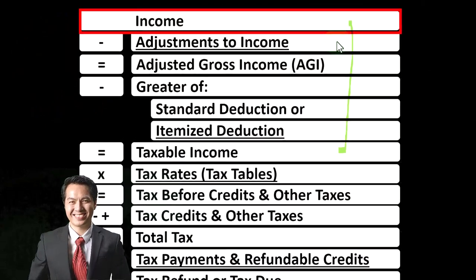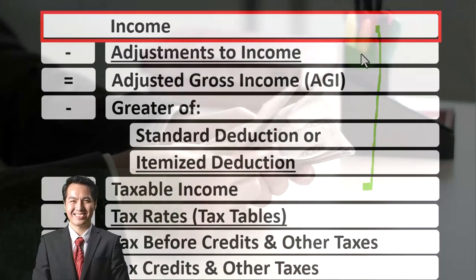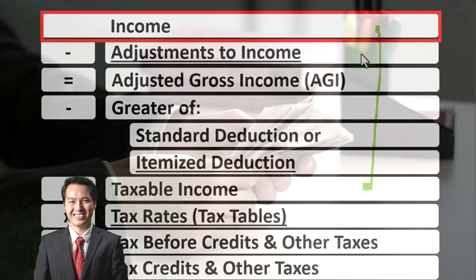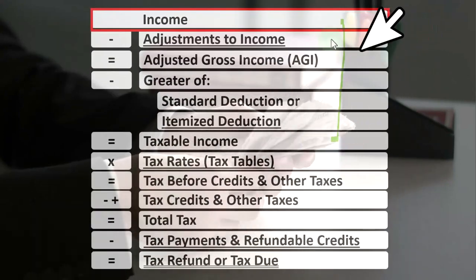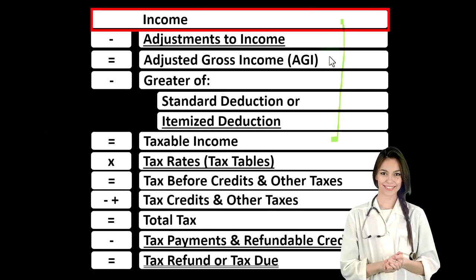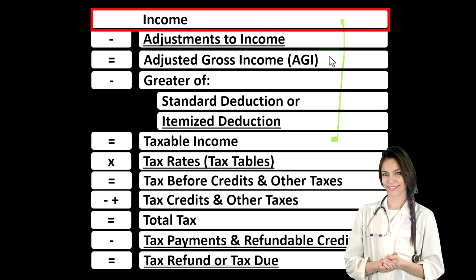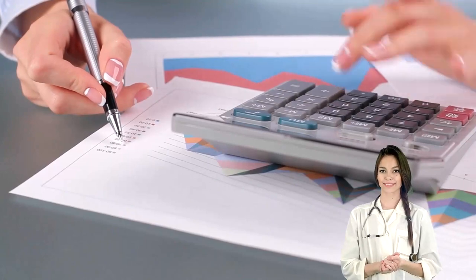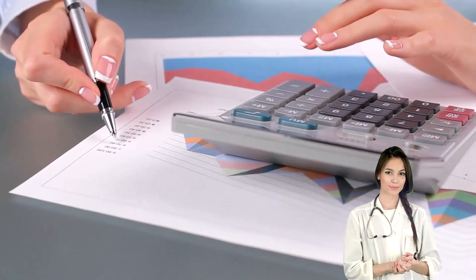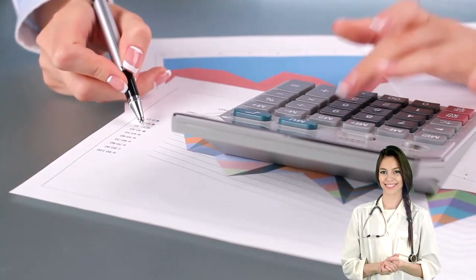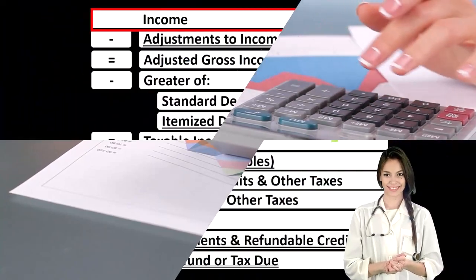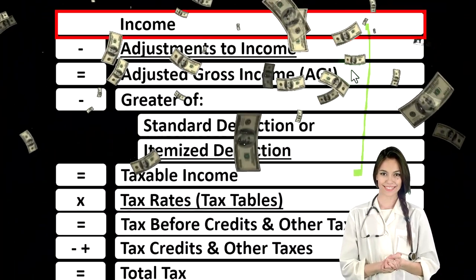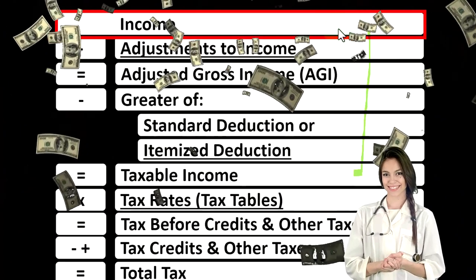Then we have the adjustments to income, which you could call above-the-line deductions — similar to expenses in income statement terminology. This gets us to the subtotal of adjusted gross income, or AGI, an important subtotal. Because when we look at phase-outs — for example, as income levels rise — the phase-outs of credits and deductions are usually based on this subtotal, adjusted gross income, rather than the income line.